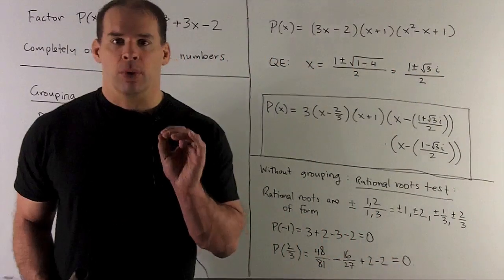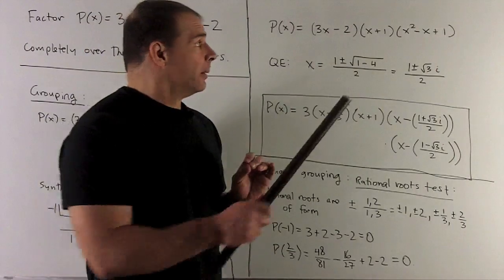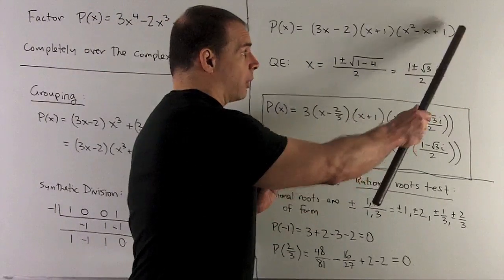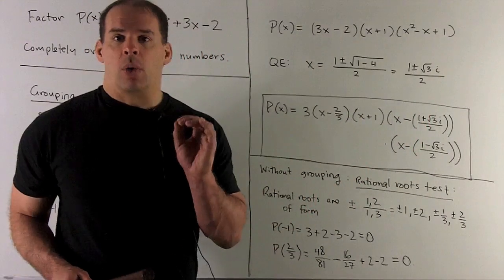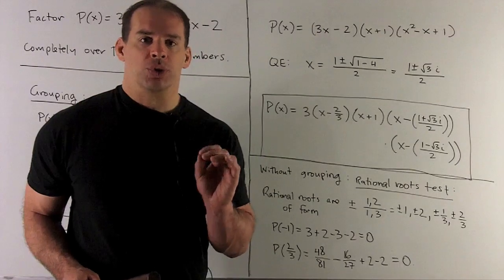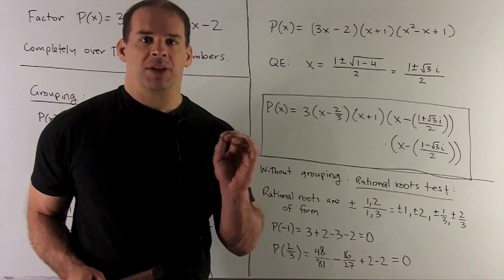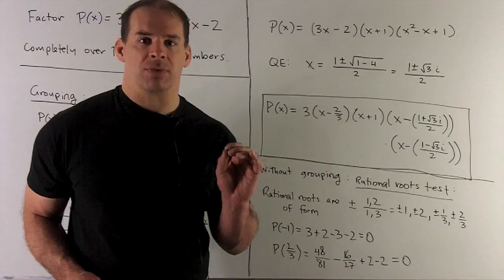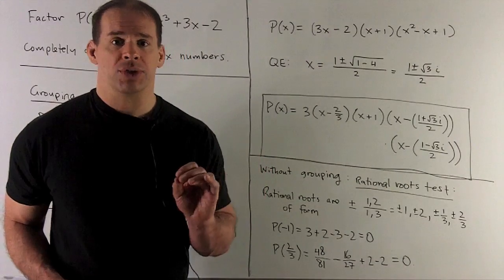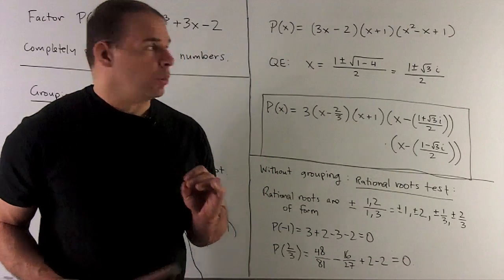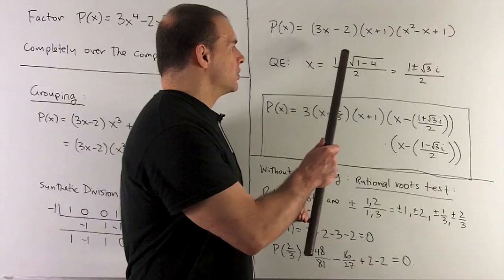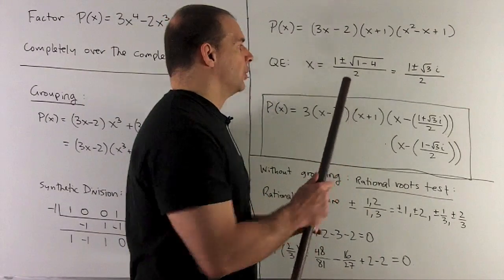So we move to the next step. We want to pull this quadratic apart. So I go to our quadratic equation. The roots are going to be (-b ± √(b^2 - 4ac))/2a. So that's going to leave me with (1 ± √(-3))/2.